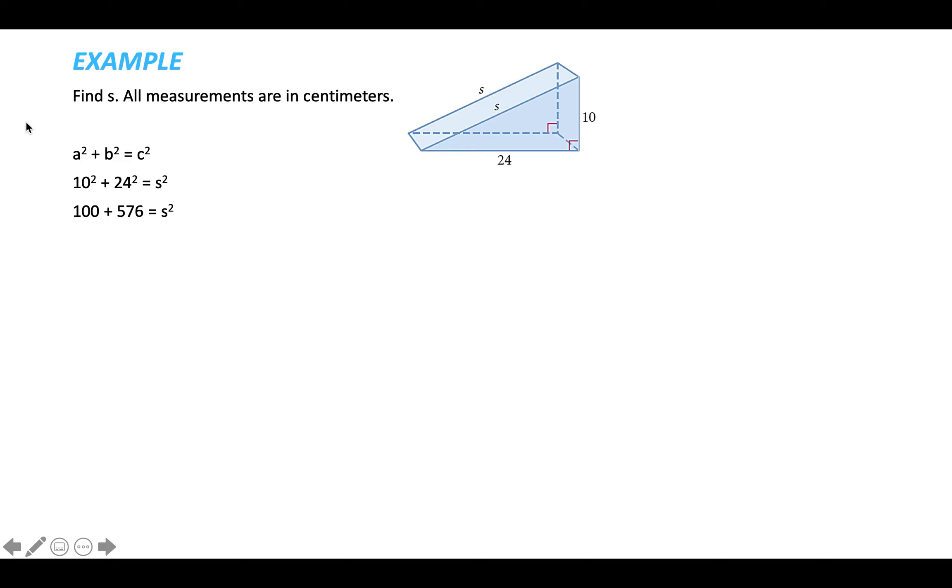10 squared is 100, 24 squared is 576, and then when we add those together, we get the hypotenuse squared, S squared. So I replaced C with S because S is the hypotenuse. 100 plus 576 is 676, and that's equal to S squared. In order to get just S and not S squared, we square root both sides. The square root of 676 comes out nicely to 26 centimeters, so S is equal to 26 centimeters.